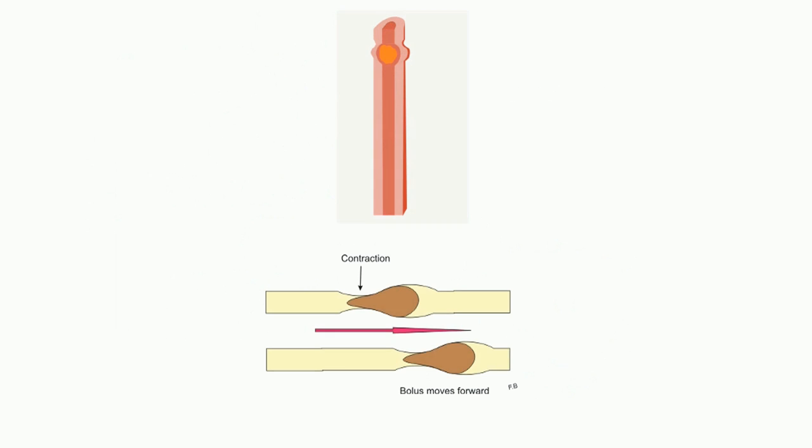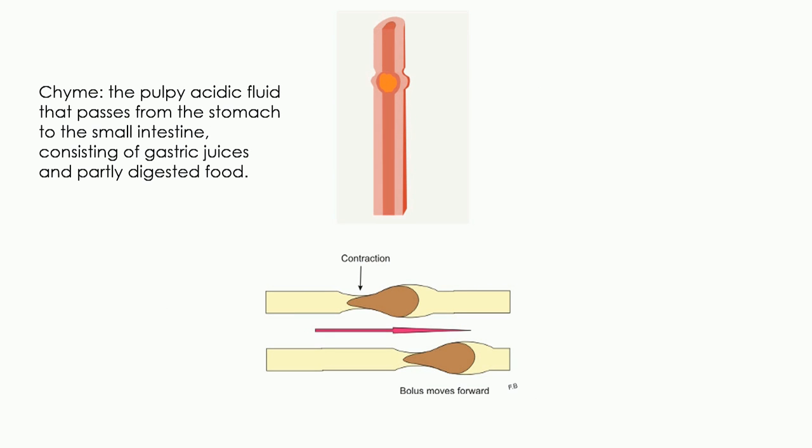Peristalsis is a series of muscle contractions that push chyme down the digestive tract. These movements can cause growls in your stomach, but gas can also be a factor in these funny noises.